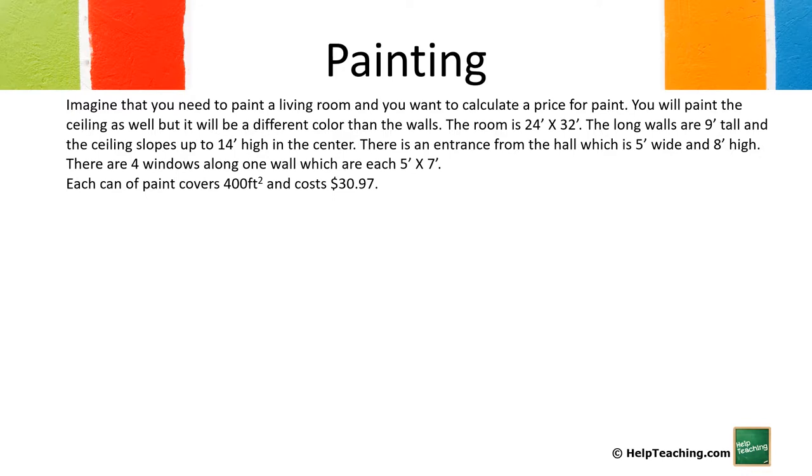Let's begin with the walls. So we have two walls that are 24 feet long and 9 feet high. We have the equivalent of two walls that are 32 feet long and 9 feet high. So at this point we're not taking into account the triangular portion at the end. So we're just imagining we're painting 9 feet high all the way around. That would come to 1,008 square feet.